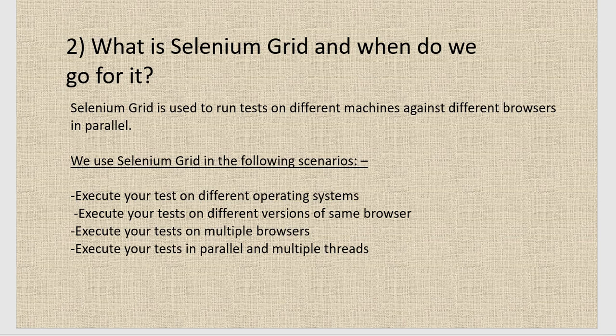The next question is: what is Selenium Grid and when do we go for it? Selenium Grid is used to run tests on different machines against different browsers in parallel, so we can use Selenium Grid for parallel testing. We use Selenium Grid in scenarios like when we have to execute test cases on different operating systems, on different versions of the same browser, on multiple browsers, or when we have to execute test cases in parallel across multiple threads.